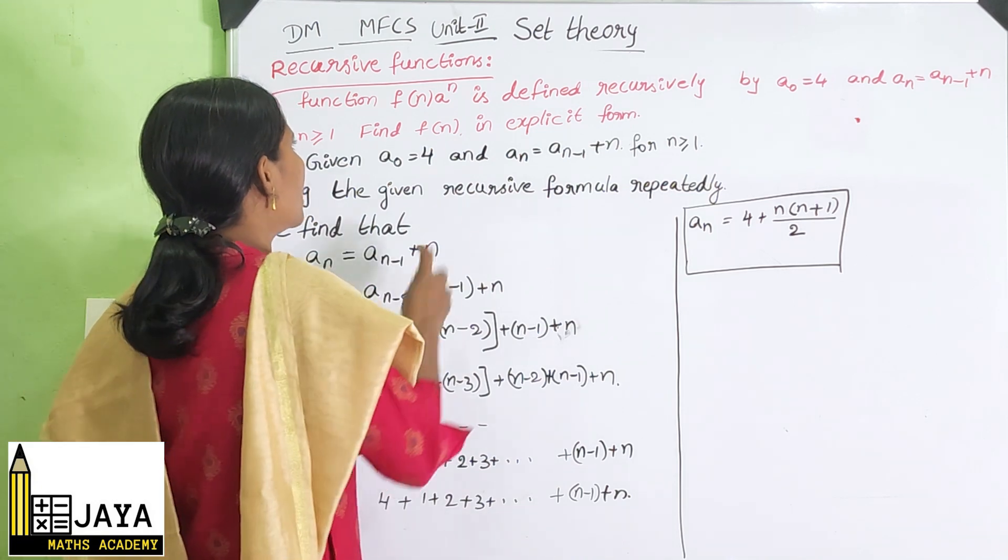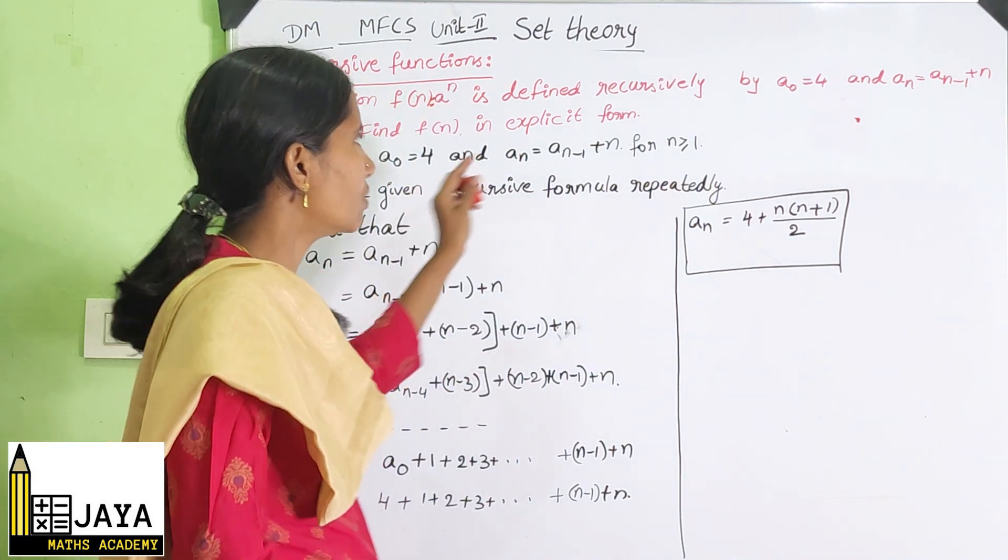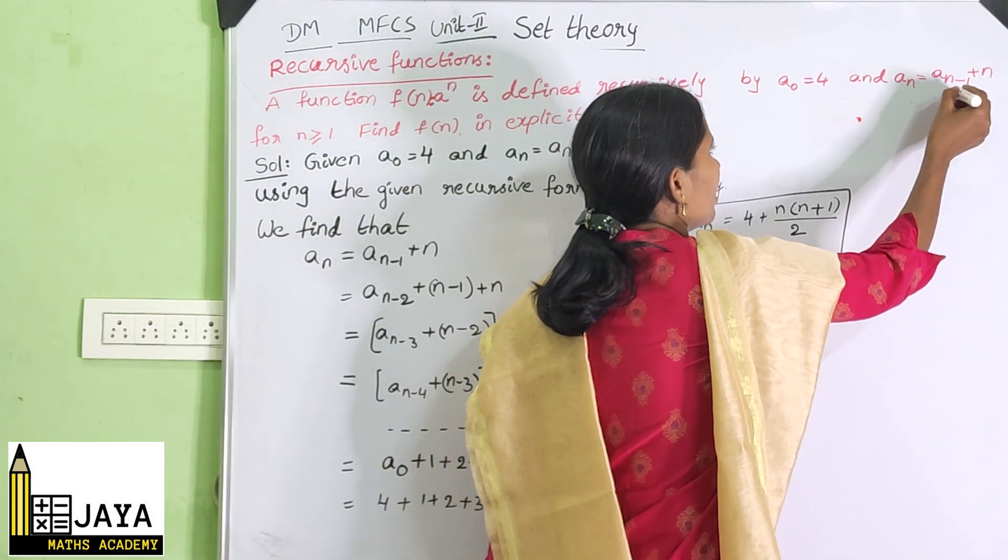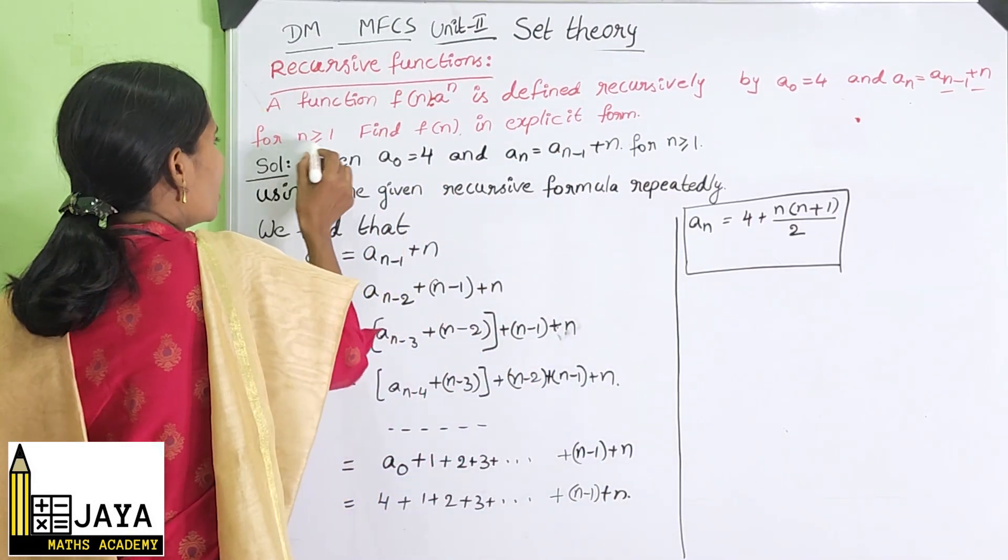A function F(n) is equal to A(n) is defined recursively by A(0) = 4, A(n) = A(n-1) + n for n greater than or equal to 1. Find F(n) in explicit form.